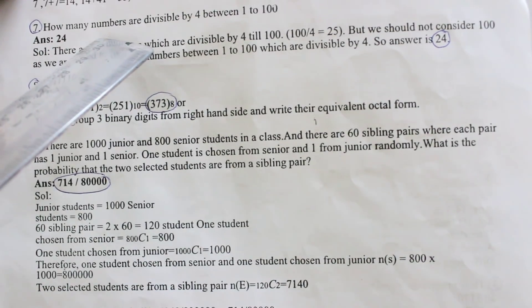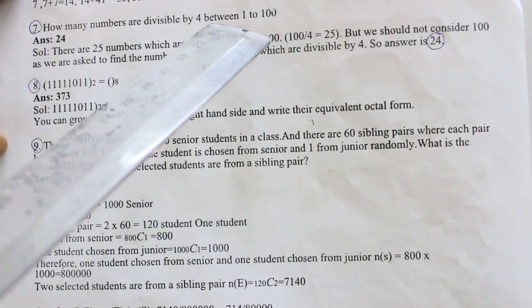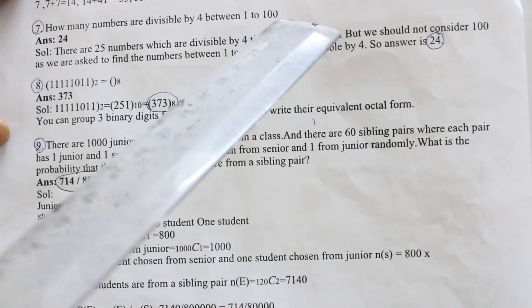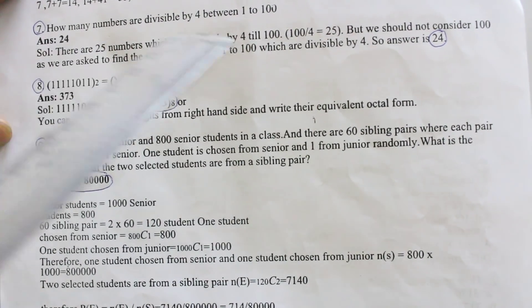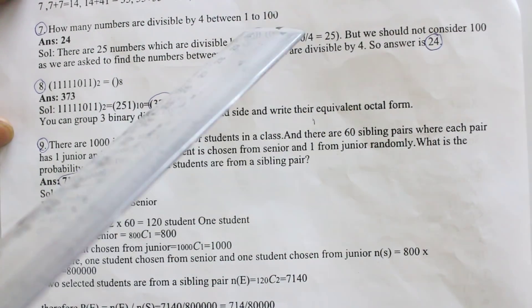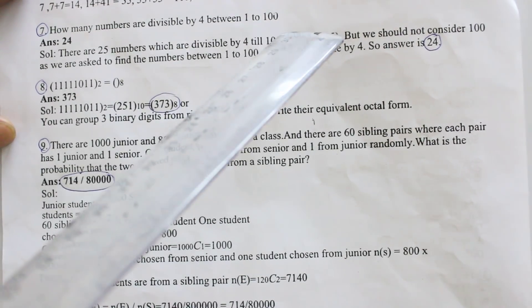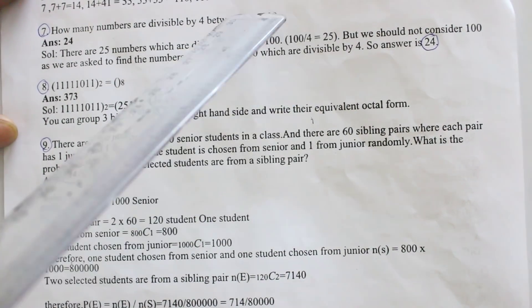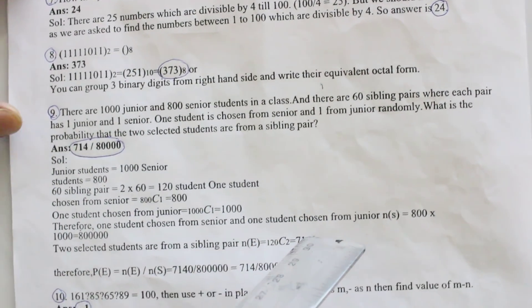The next seventh question: How many numbers are divisible by 4 between 1 and 100? This question answer is 24. Generally 1 to 100 the divisible numbers is 25 but 100 is not counting. Why? Because 1 to 100 between, that's why 24.